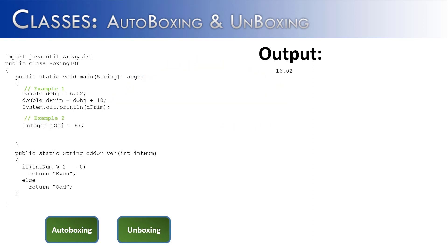Another example of this, using integers, I have IOBJ which is assigned as 67. Guess what's happening here? We have a primitive on one side, object on the other. It's going to be autoboxing. 67 is going to be autoboxed as an integer object. And then on the next line, what we're going to do is we're going to call the method oddOrEven.